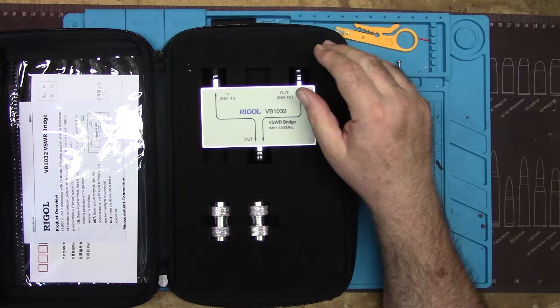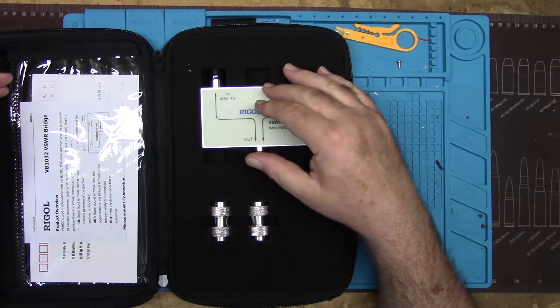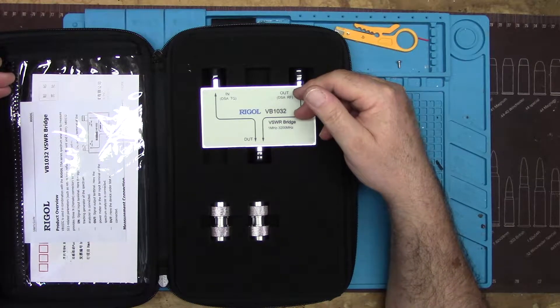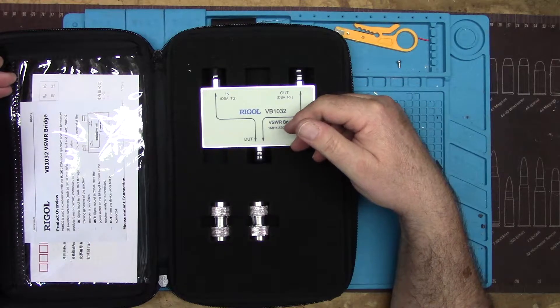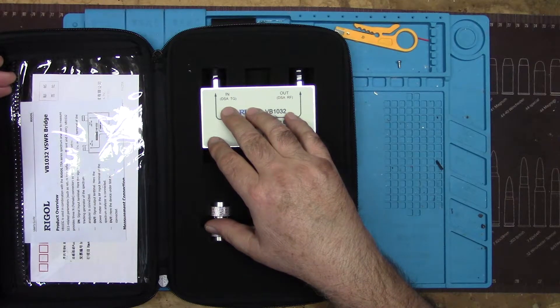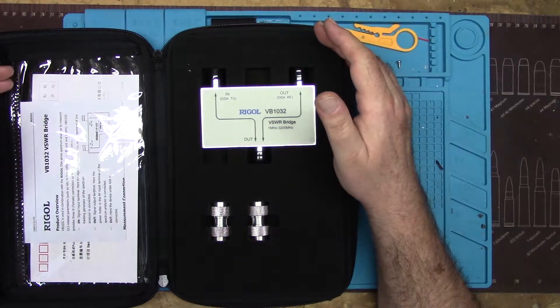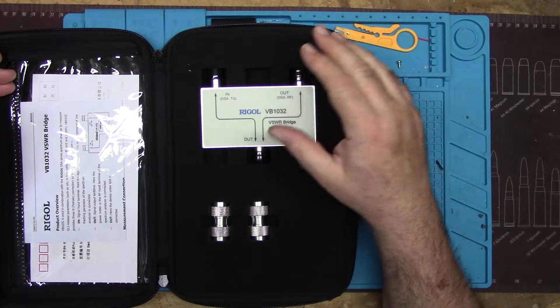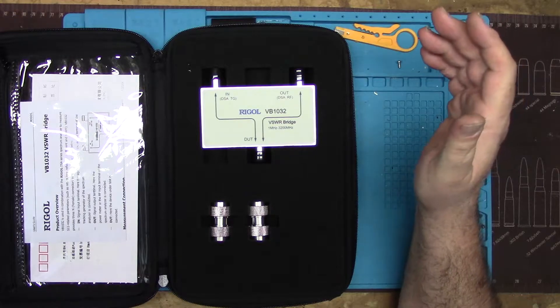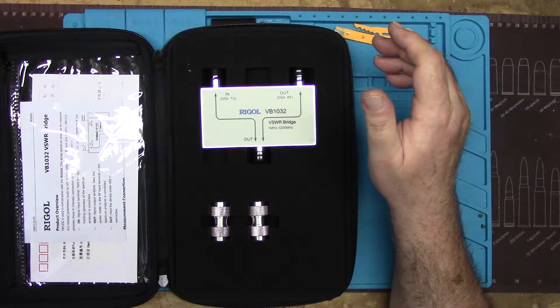When you buy this, it comes with the software key. I had an eval key from Regal when I bought the spectrum analyzer with a 40-hour lifespan. This is a permanent key that I can put into the spectrum analyzer forever. It is not cheap, but this is a tool that I'm going to use over and over as an amateur radio guy. A lot of the functions you can do with a tiny SA, but this is a precision instrument to go with my spectrum analyzer.